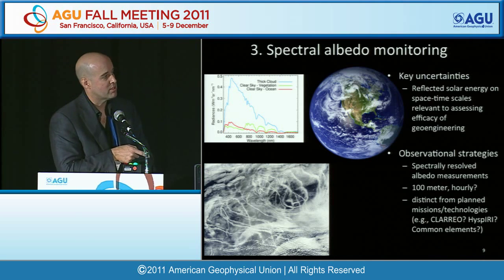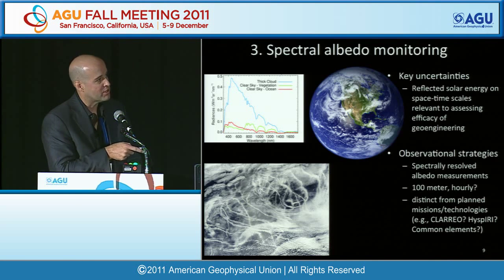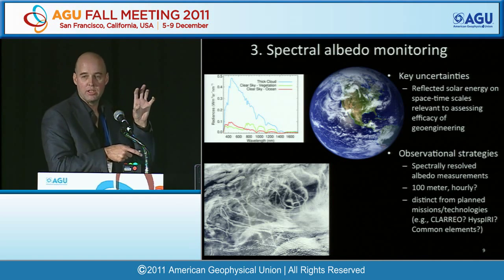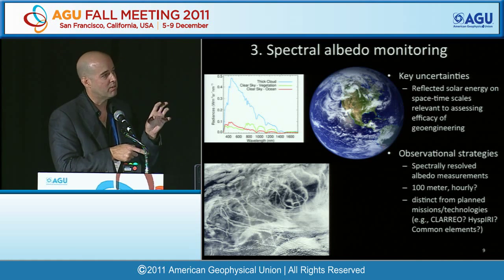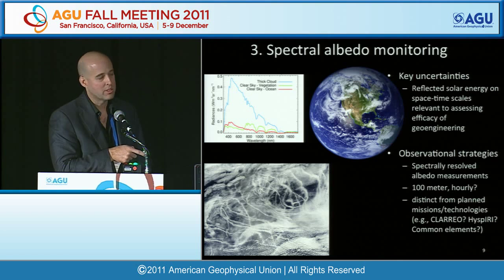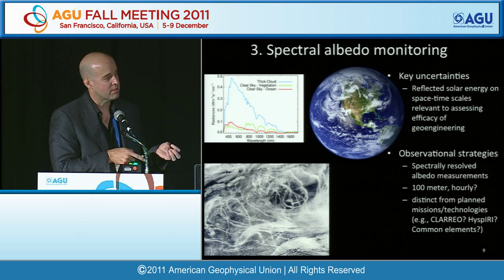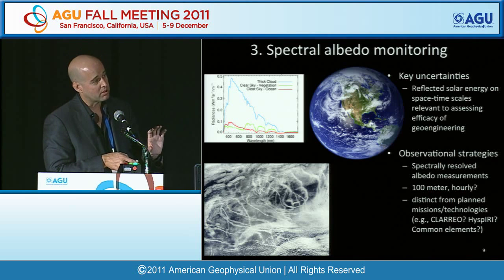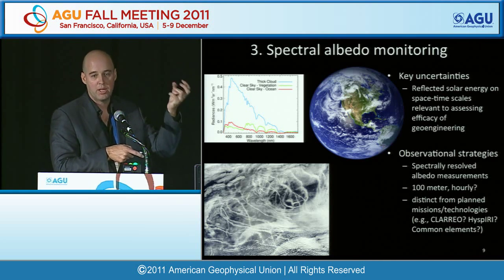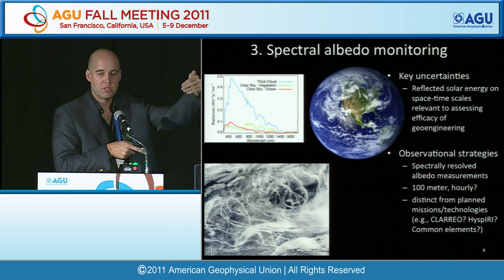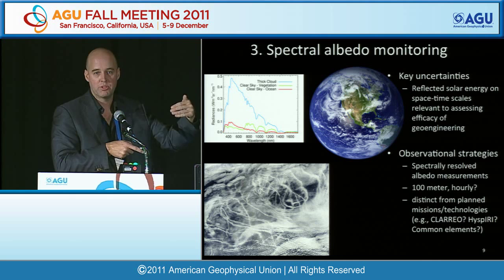Specifically on albedo monitoring, Graham Stevens is leading a sub-team looking at key uncertainties in reflected solar energy on space-time scales relevant to assessing geoengineering. If one is trying to steer things with ship tracks and generate clouds on small scales, it may drive you to provide spectrally resolved albedo measurements on smaller space-time scales than available with planned climate observations. The strategy is to provide that information with either planned observations, or identify how to fill those gaps with future observing systems.